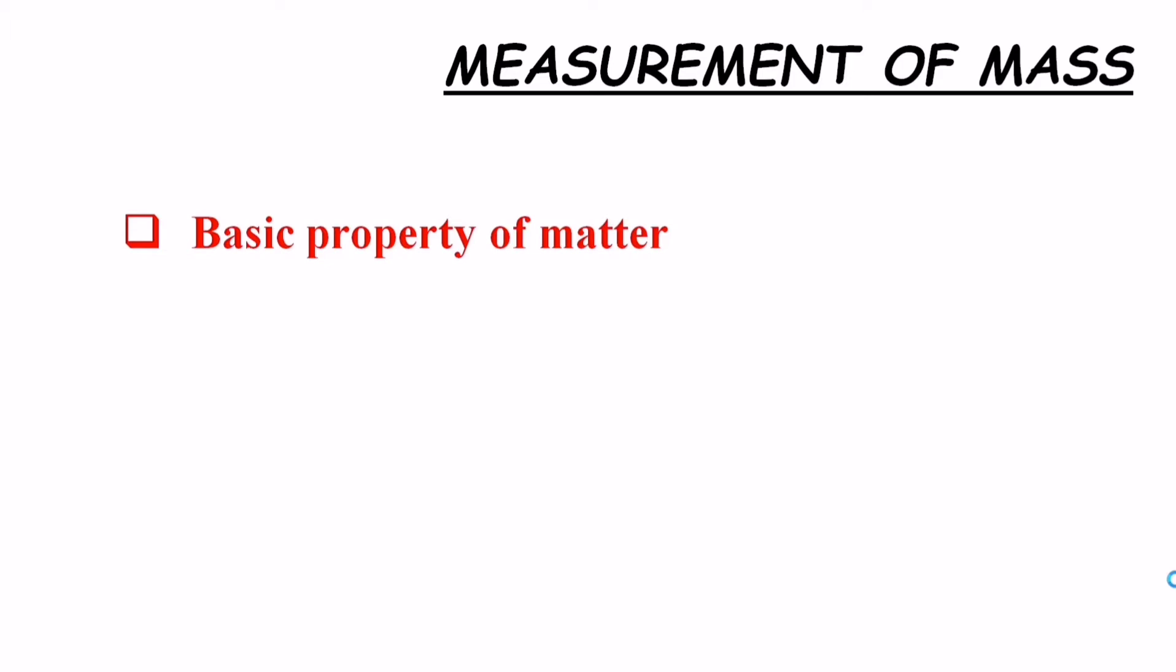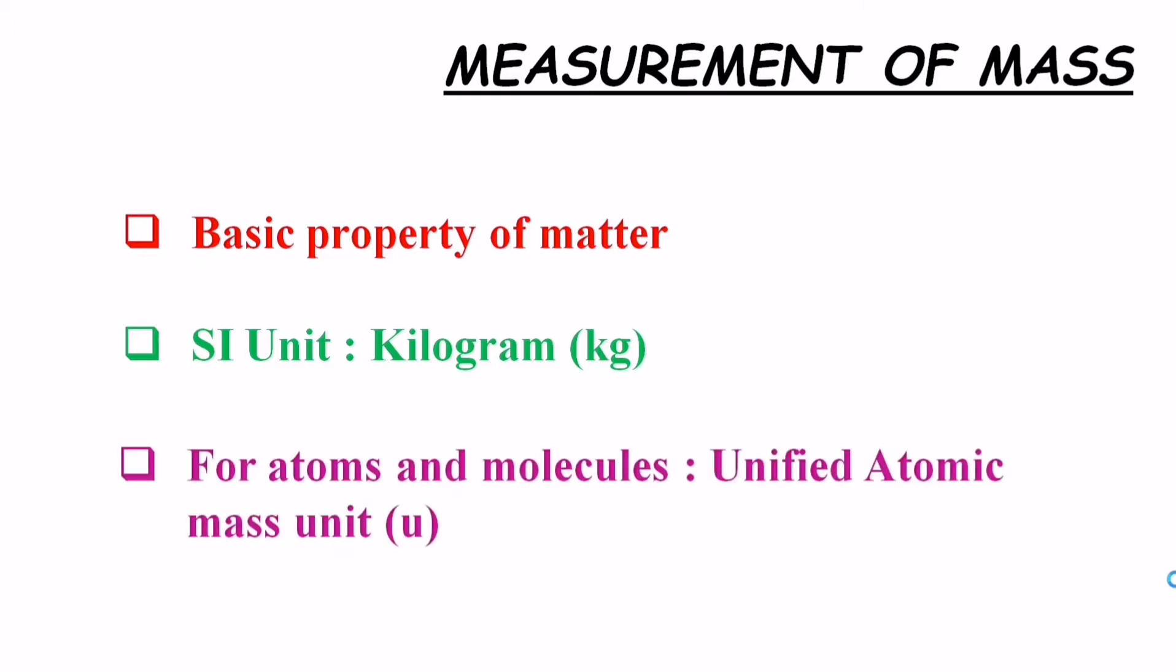Second, you already know the SI unit of mass is kilograms, but like we saw in the case of length in the previous video, mass of various objects in the universe are spread over a range of orders. So maybe for higher masses we can still use kilograms, but for the lower range it becomes very difficult to measure mass in terms of kilogram. And so we have a different unit, that is unified atomic mass unit, for measuring masses of very small particles like atoms and molecules. We will discuss more about this later in the video.